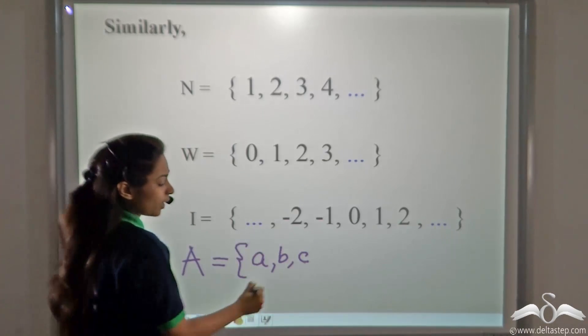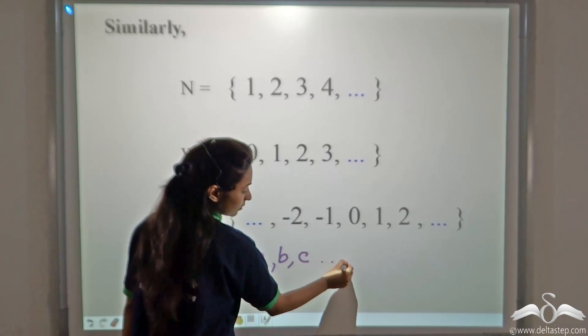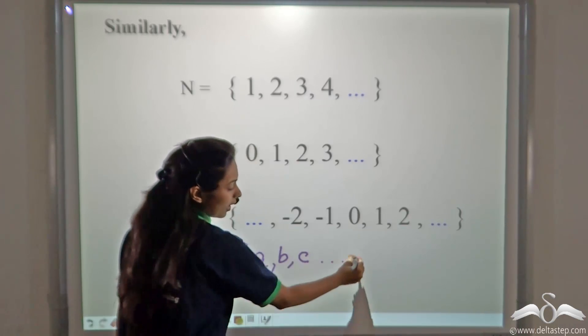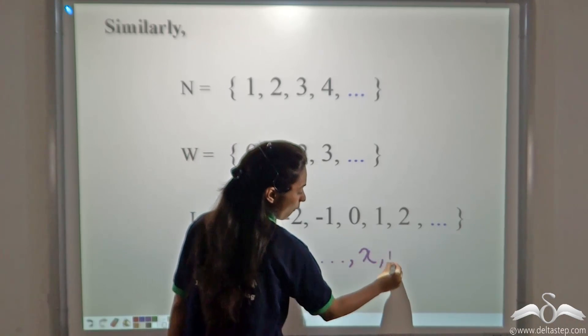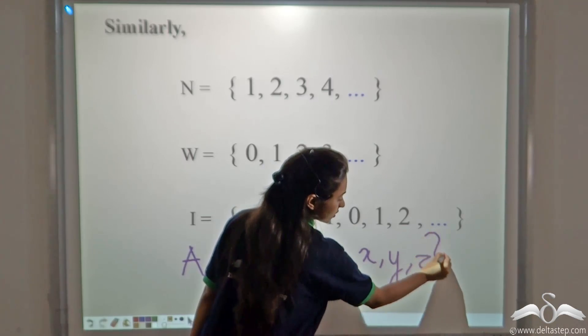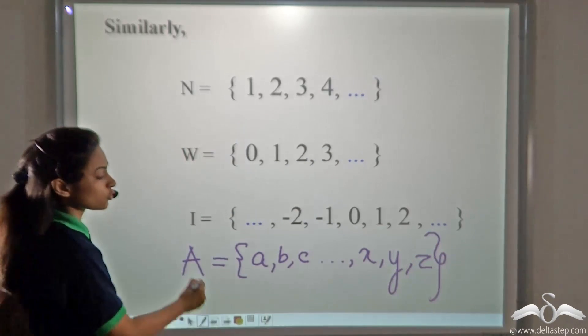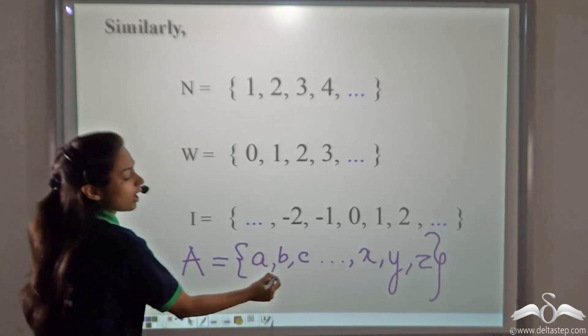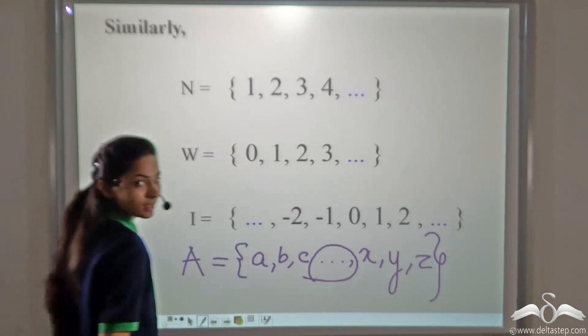Now, you want to avoid the long listing part. So, put ellipses. Give a comma and write X, Y and Z and close the curly bracket. So, this will give your answer and avoid the long listing part.